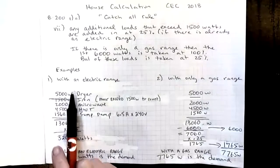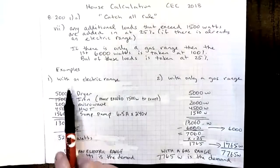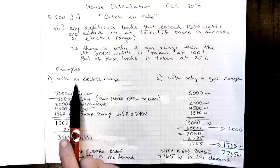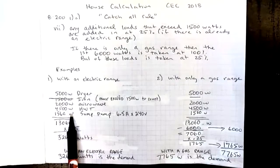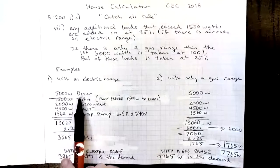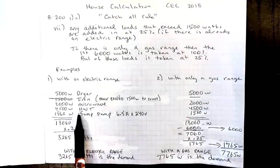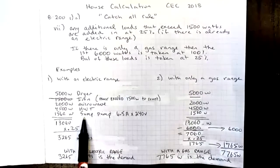On the left hand side of my page I've got an example where we've already done a calculation for an electric range, and we're just adding in the catch-all items. So in this list I have a dryer, an iron, a microwave, hot water tank, and a sump pump.